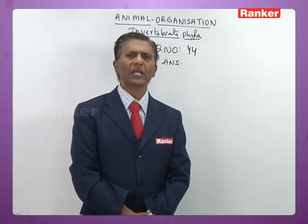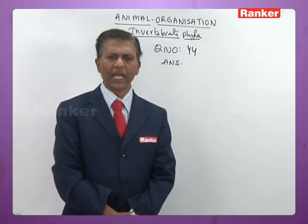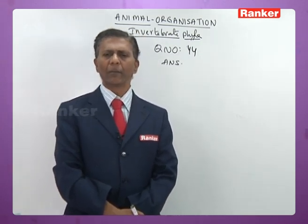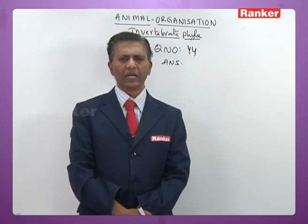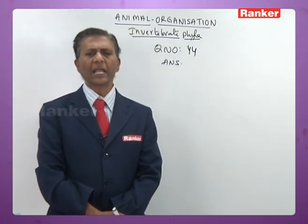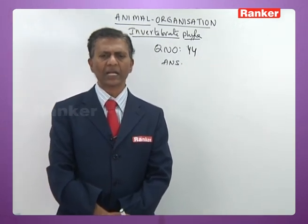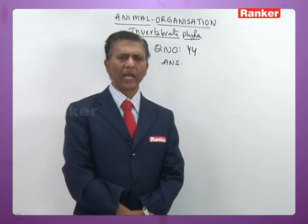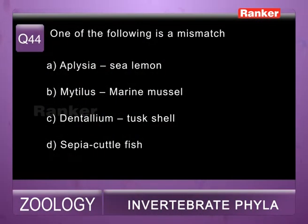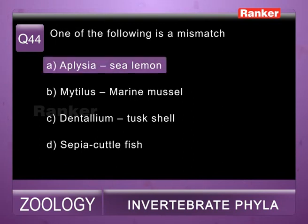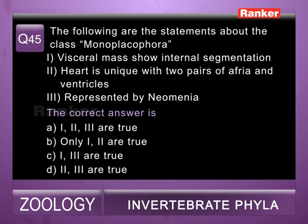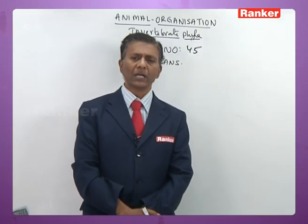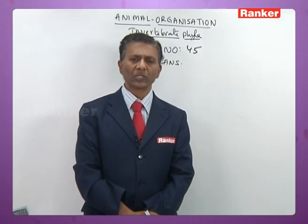Question forty-four: one of the following is a mismatch — a) Aplysia commonly called sea lemon (wrong — Aplysia is commonly called sea hare), b) Mytilis commonly called marine mussel (correct), c) Dentalium commonly called tusk shell (correct), d) Sepia commonly called cuttlefish (correct). So the answer for forty-fourth question is a.